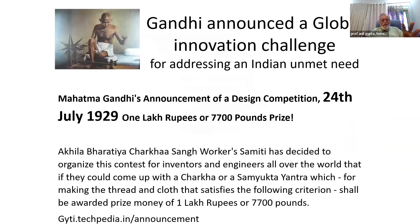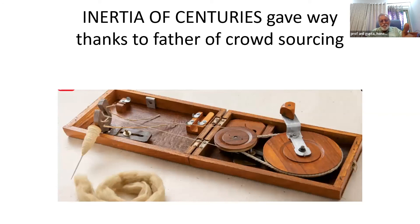Gandhi in 1929 gave a call when he found that from 1920 to 1929, he had failed in modifying the design of the spinning wheel. He announced a competition with seven thousand seven hundred pounds — one lakh rupees, now worth billions — and he got this design by 1931: foldable, transportable, easy to manage and maintain. So crowdsourcing was done as far back as 1929, and there are many examples in Europe even before that. This was a responsible innovation because he made a condition that if you want the award money, you have to make your design open source. Sometimes challenge awards can be a very powerful way of overcoming inertia in society.